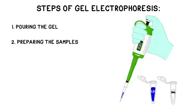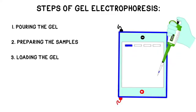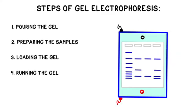There are several basic steps to performing gel electrophoresis: pouring the gel, preparing the samples, loading the gel, running the gel, and staining the gel. We'll go through each of these steps in turn.